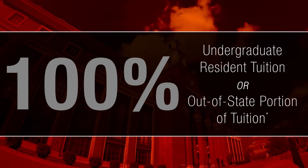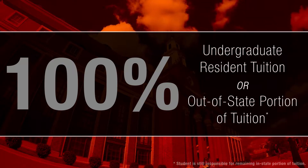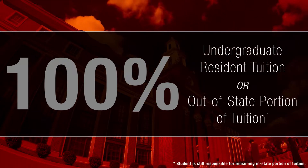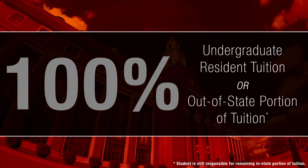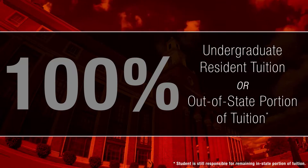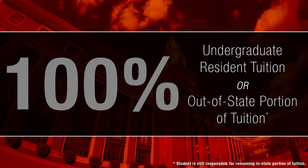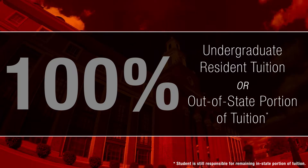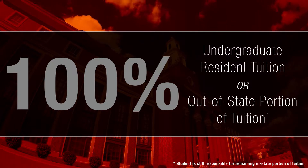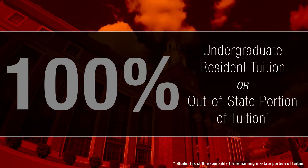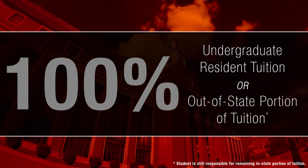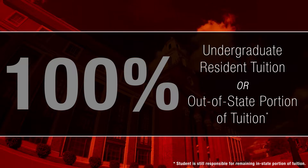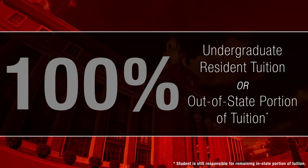This benefit waives 100% of undergraduate resident tuition, or 100% of the out-of-state portion of tuition if the dependent child does not qualify for in-state residency. Out-of-state dependents will still be responsible for the remaining in-state portion of tuition.